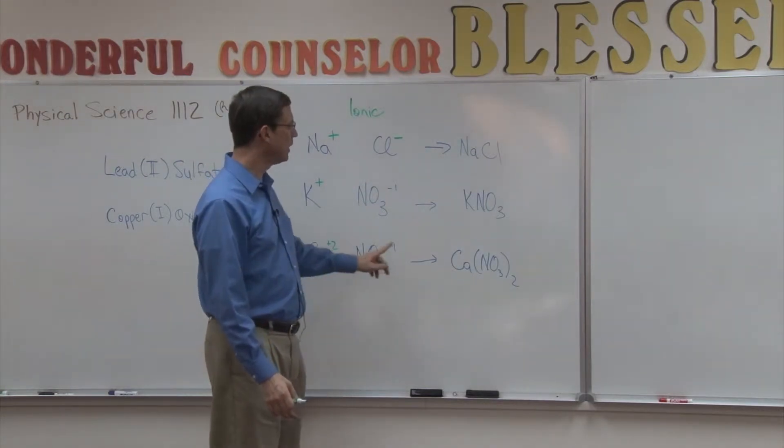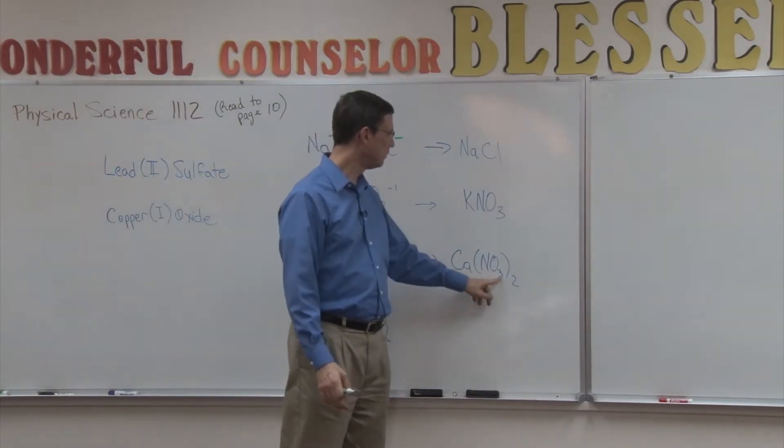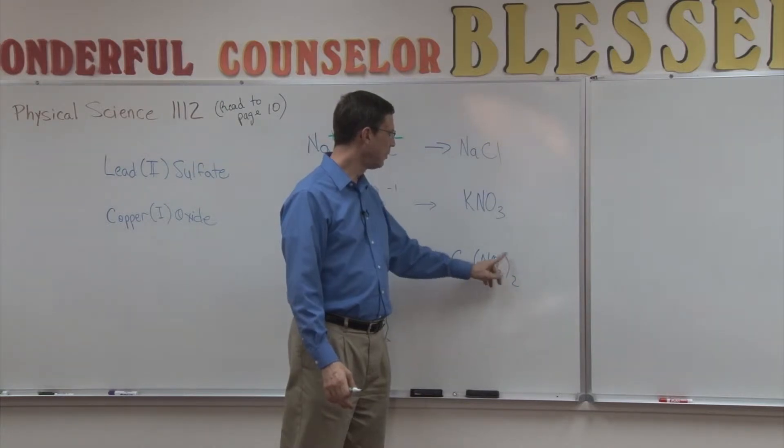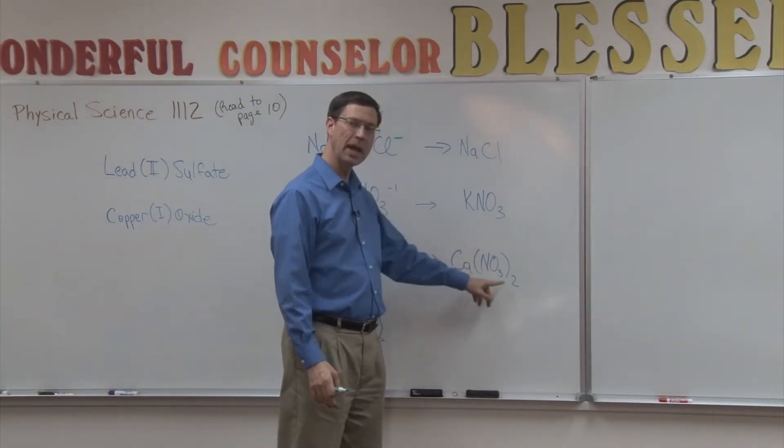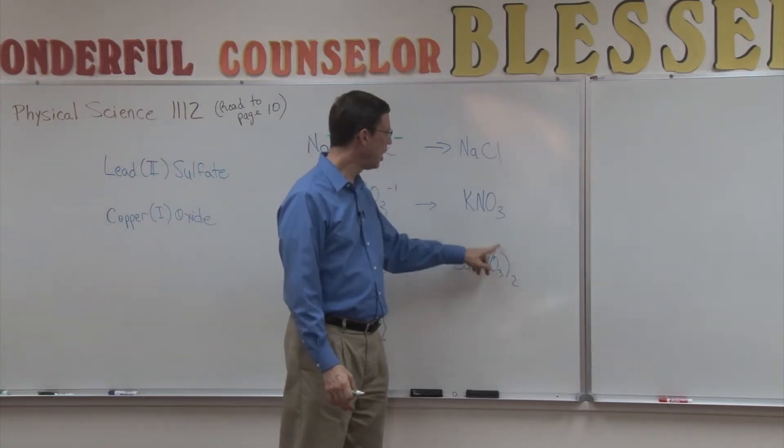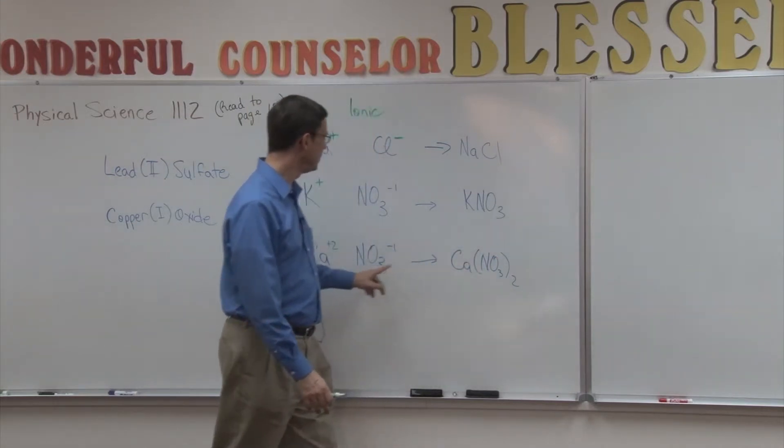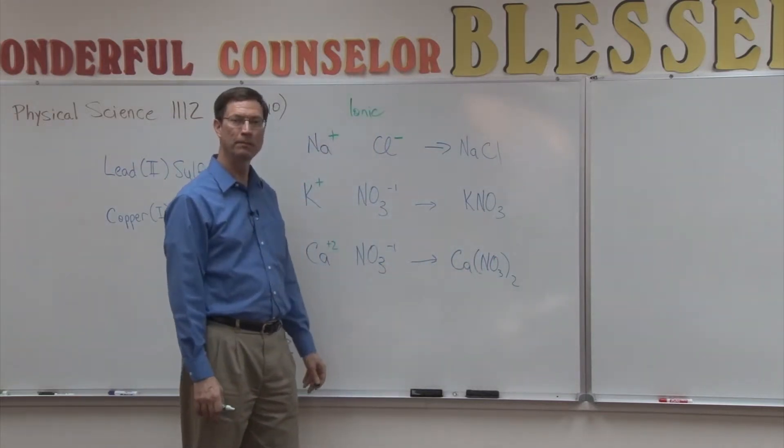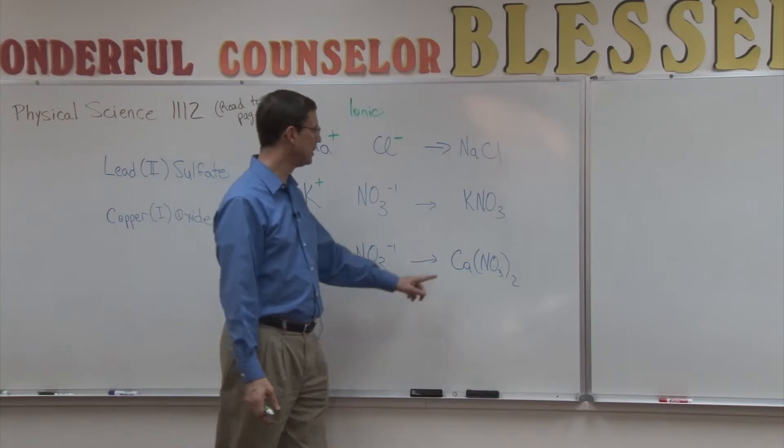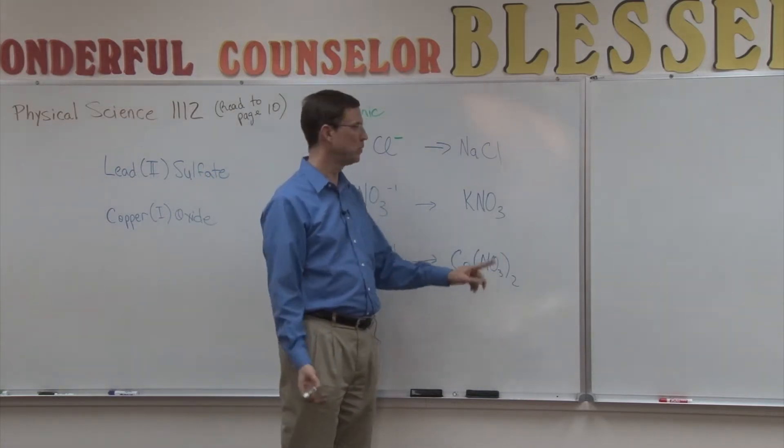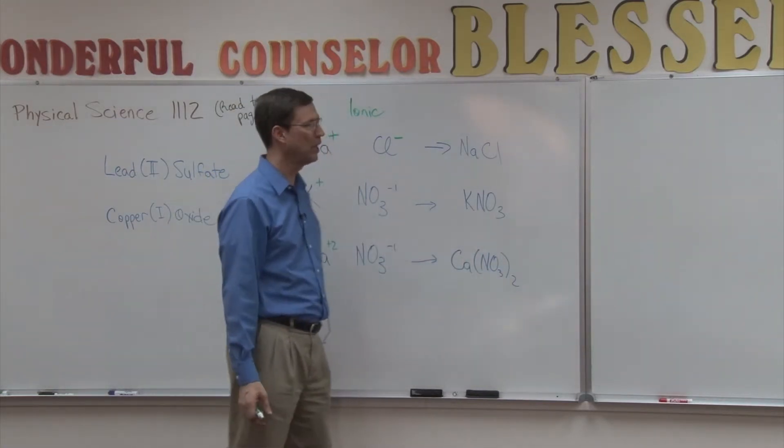So this is the way I would write it. Nitrate, put it in parentheses because this is a gang. And I'm saying I need two of these gangs, two of the negative one gangs to balance the one calcium. But the name is real easy. Calcium nitrate, just like this was potassium nitrate.